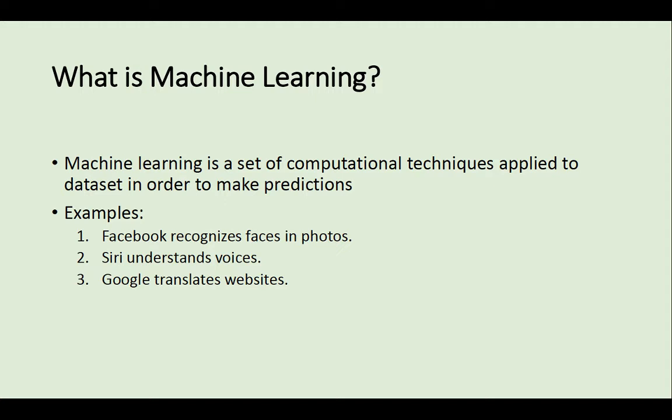What does machine learning do? There are some examples. First, Facebook recognizes faces in photos. Siri understands voices. Google translates websites. They are all examples of machine learning.